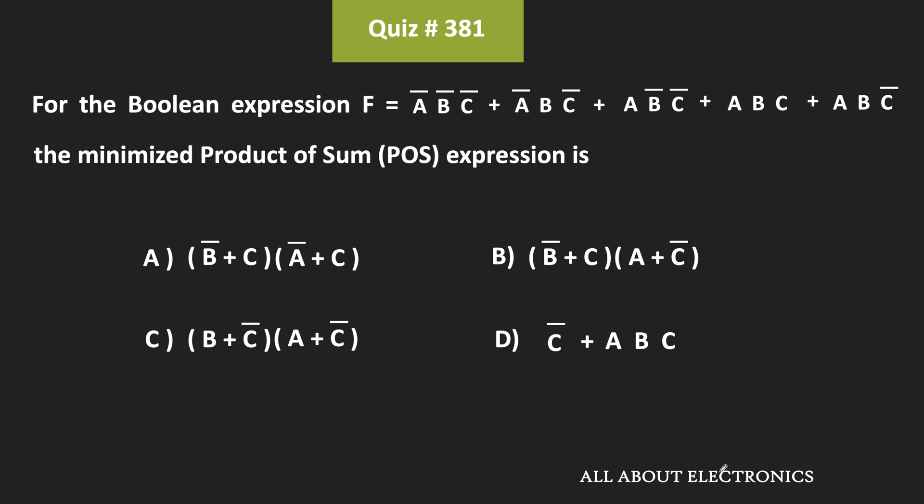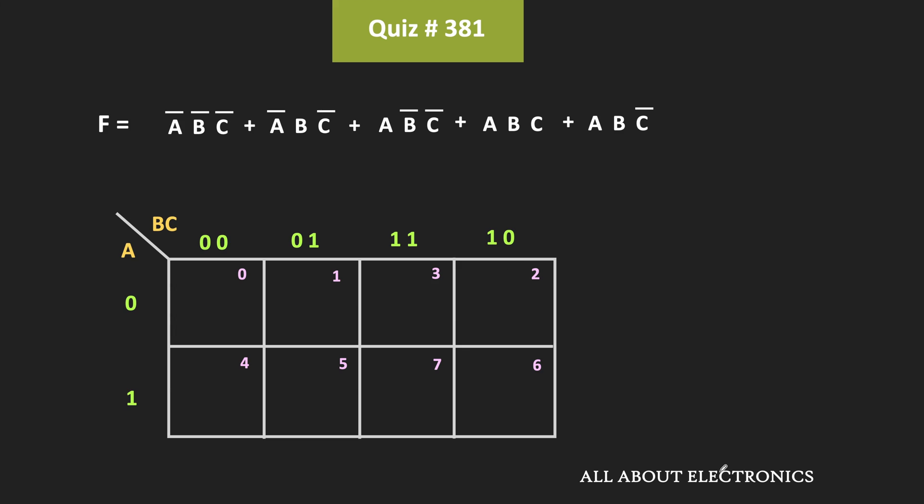Hey friends, welcome to the YouTube channel AllAboutElectronics. So in this question, we have been given this boolean function f and we have been asked to find its minimized expression in the product of sum form. So first of all, let us minimize this expression using the K-map.